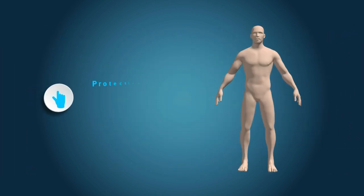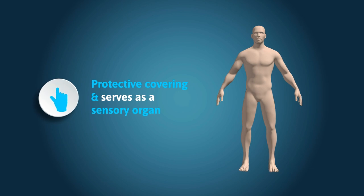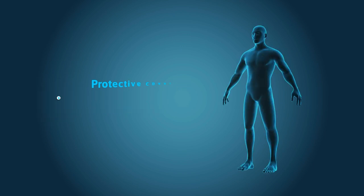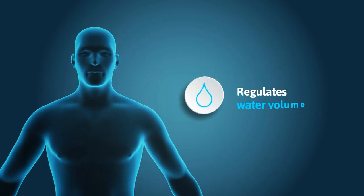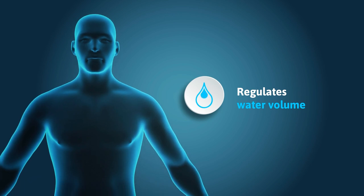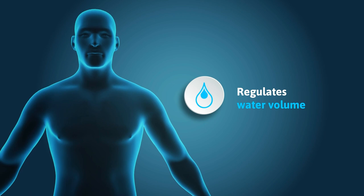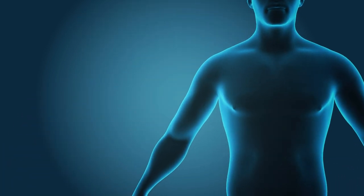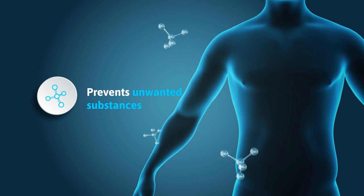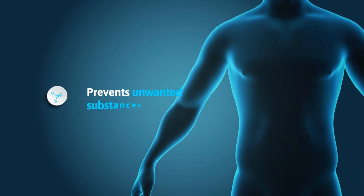This remarkable organ not only serves as our body's protective covering but also acts as our primary interface with the outside world. It plays a vital role as a sensory organ, allowing us to feel and perceive the world around us. Our skin is responsible for maintaining the correct balance of water and essential compounds within our bodies, ensuring everything functions smoothly. It acts as a natural defense system, preventing unwanted substances, including some chemicals that could harm us.